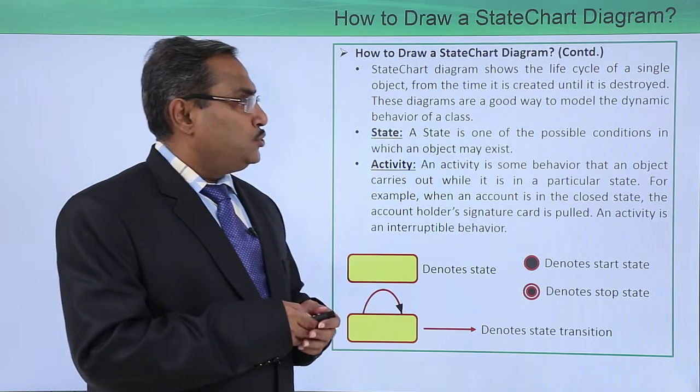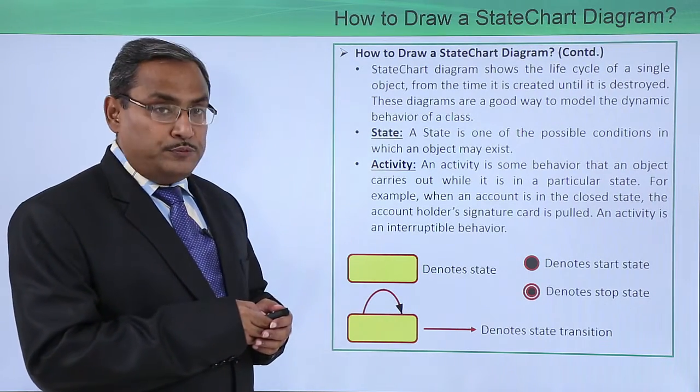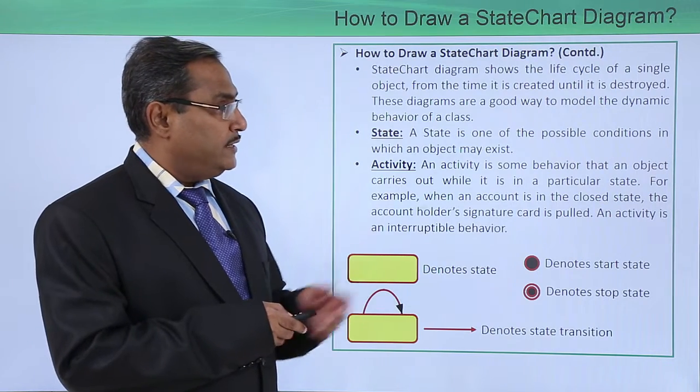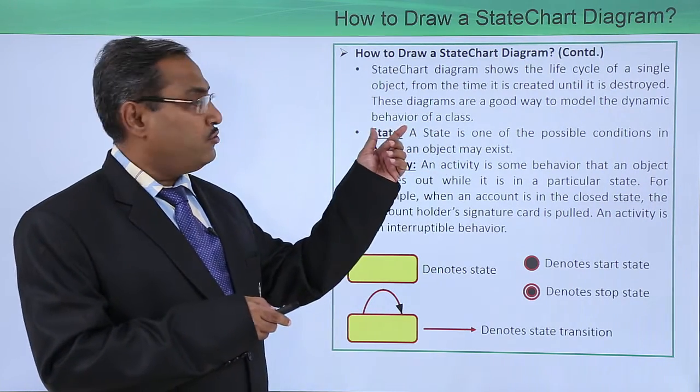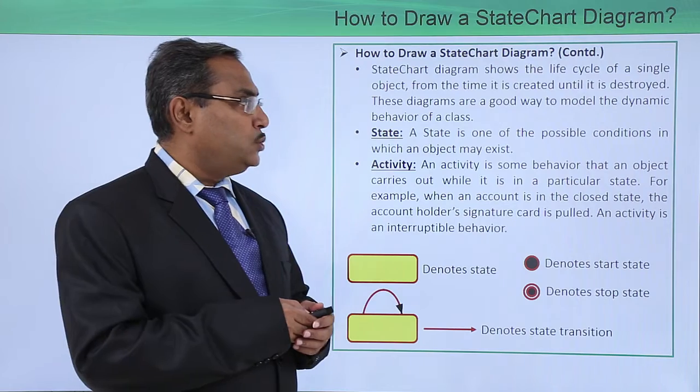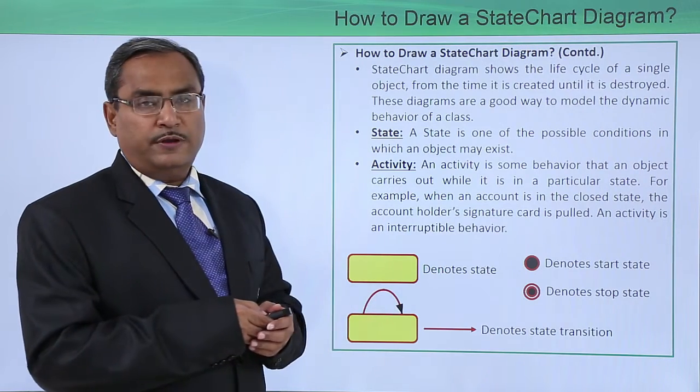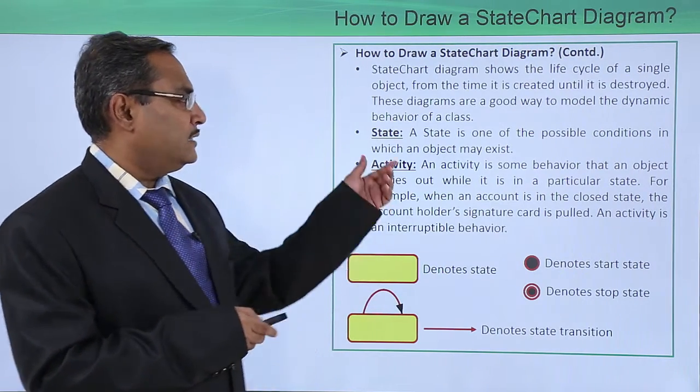State Chart Diagram shows the life cycle of a single object from it is created until it is getting destroyed. These diagrams are a good way to model the dynamic view and dynamic behavior of a class.